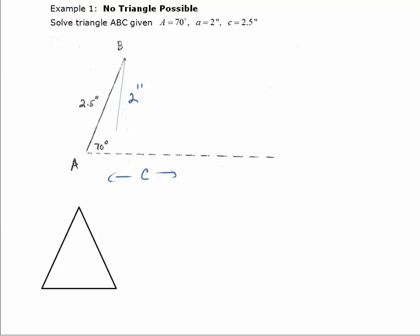We're going to draw a triangle. We're going to assume there is one. So we draw triangle ABC as if there is one. And we're going to fill in 70 degrees for angle A. Side A is 2 inches.